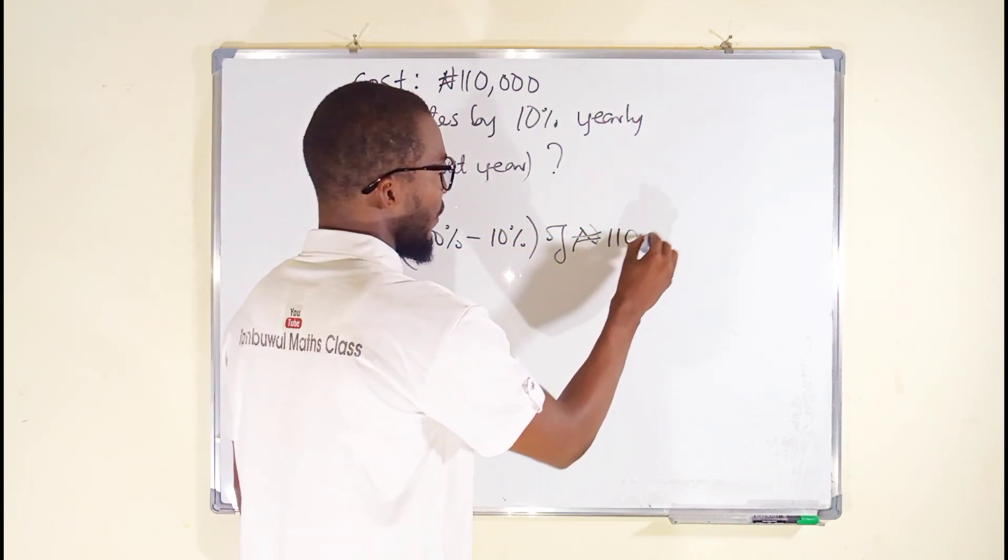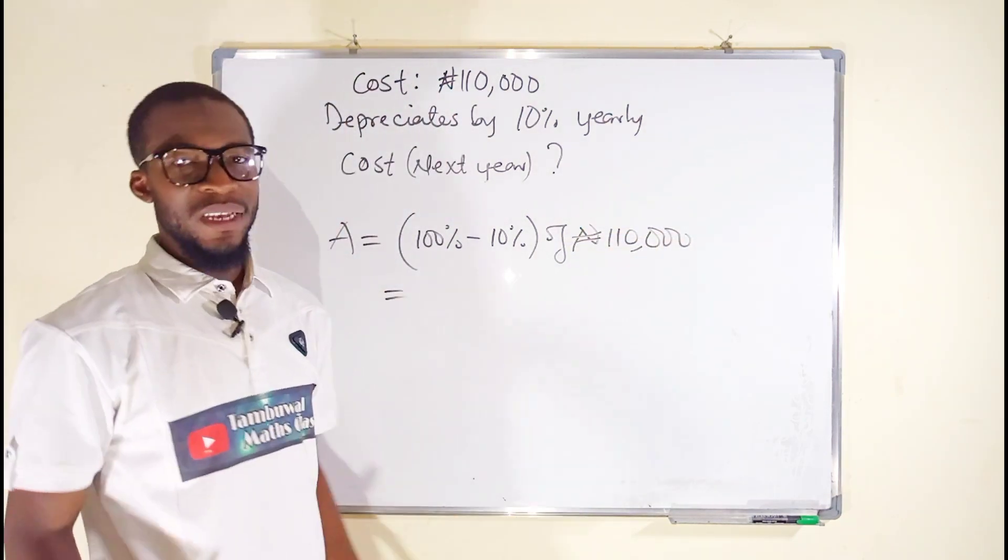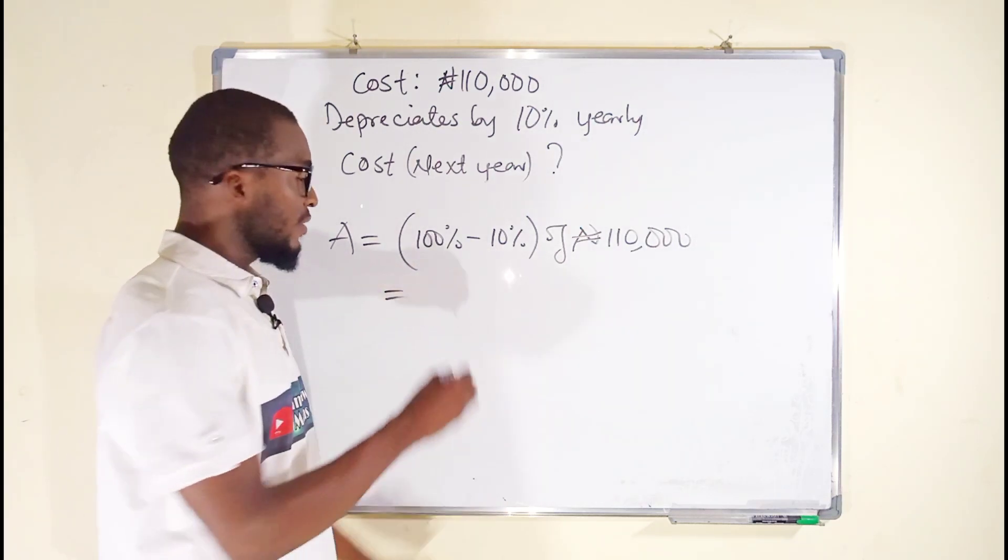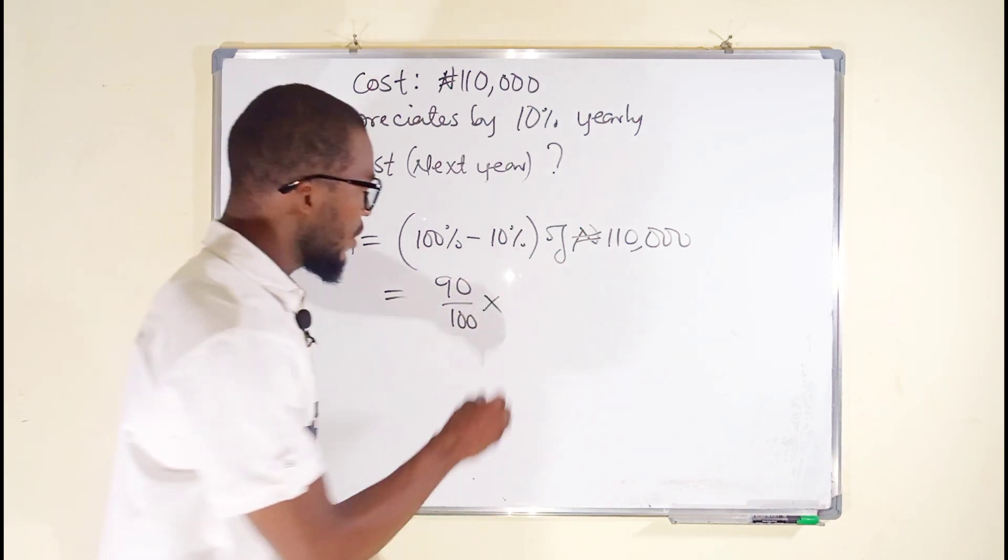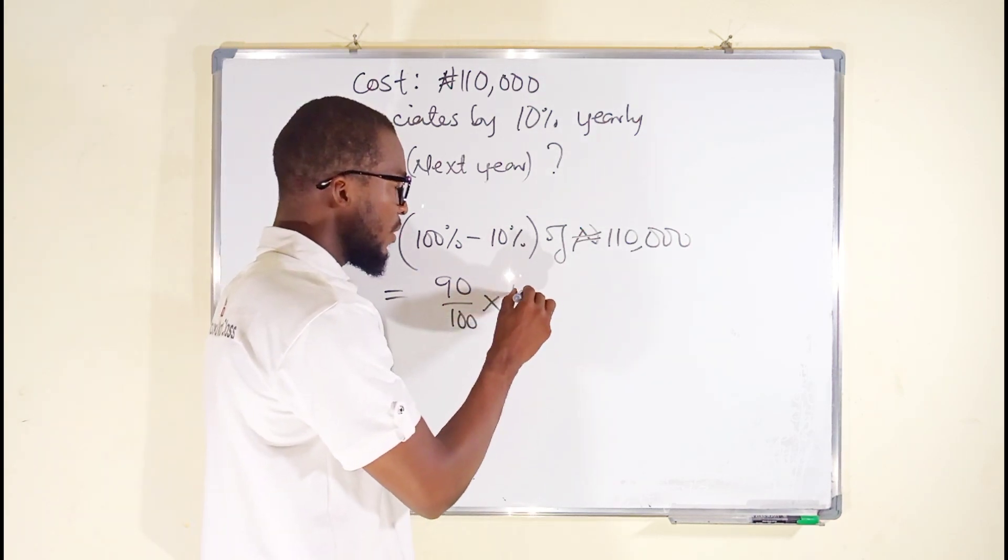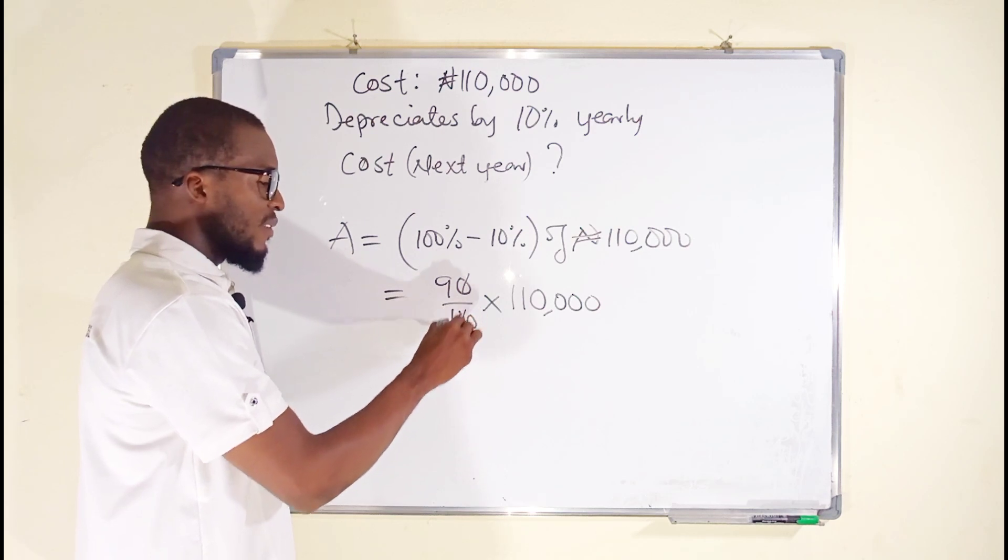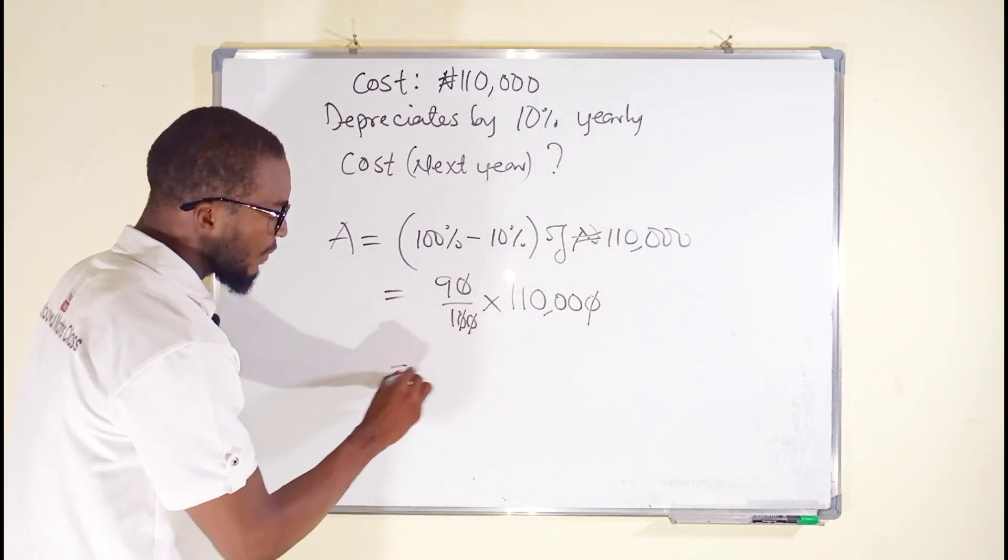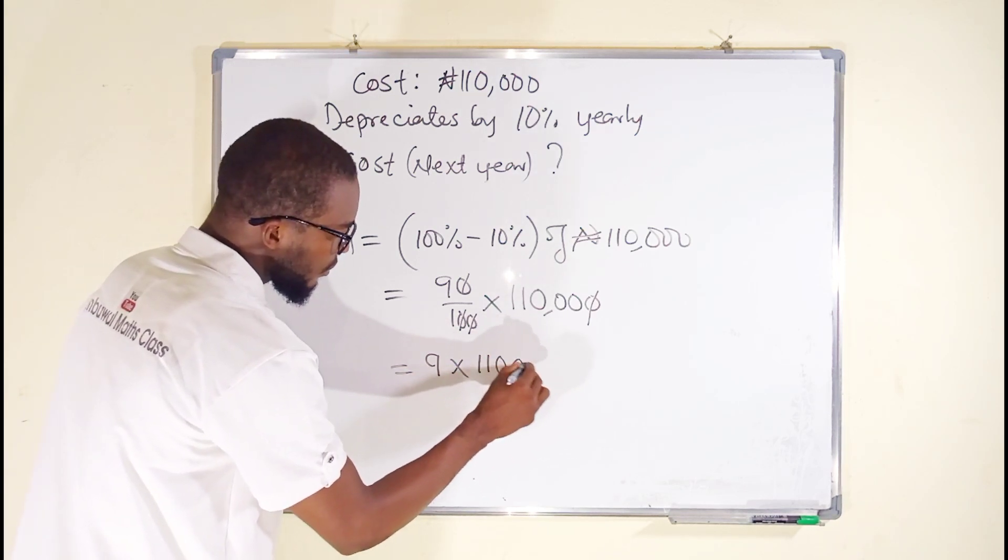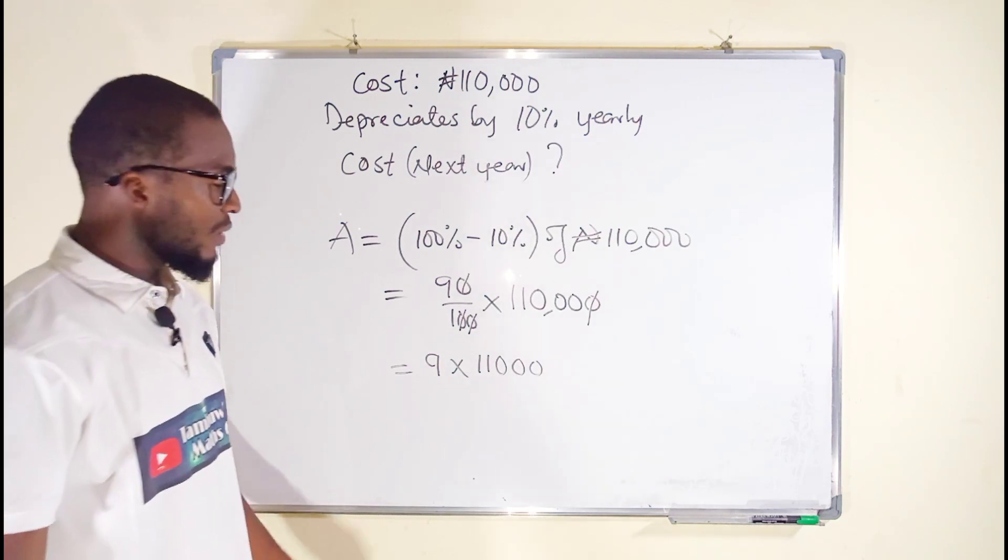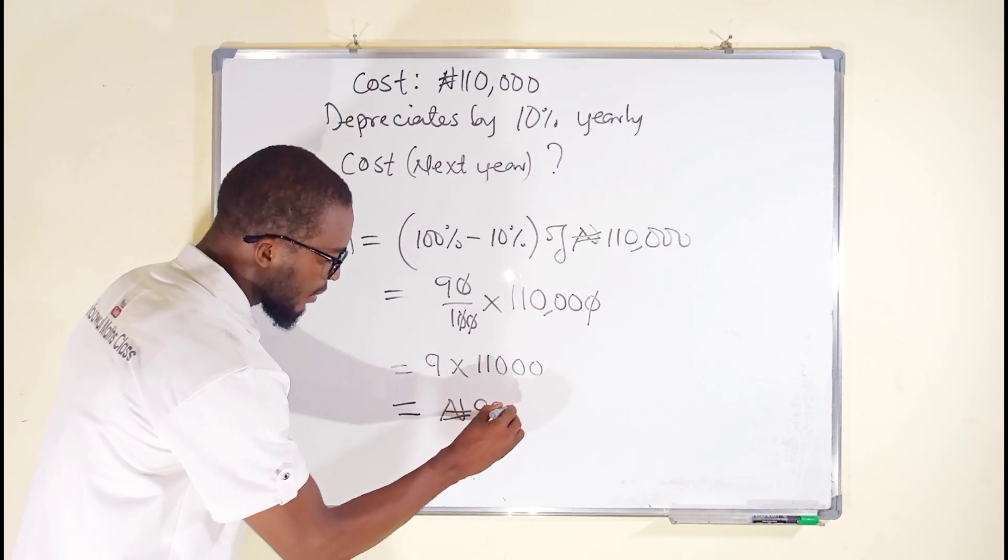100 minus 10 is 90. It is in percentage, so we have 90 percent, 90 divided by 100 times 110,000. This zero will take care of the zero, this other zero will take care of this. What we have is just 9 multiplied by 11,000. 9 times 11,000 is equal to 99,000. You see, straightforward. This is the amount next year, in the coming year.